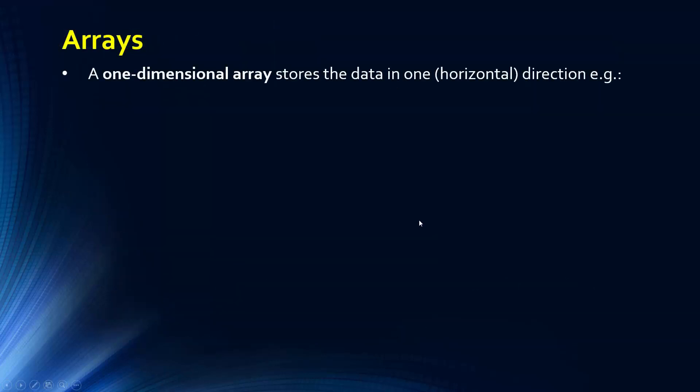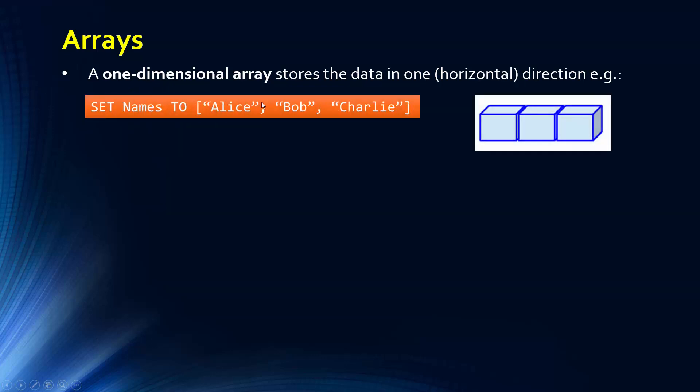If we look at two types of arrays, the first one being a one-dimensional array. A one-dimensional array stores the data in one direction, often visualized as being horizontal. This is the vector. This is pseudocode, Edexcel pseudocode for setting an array. This is our identifier name called names. If we want to access one of these elements, this is the format in pseudocode we might use. This is our index position one, we're going to be zero indexing. Alice is zero, Bob's one, Charlie's two. So we're going to get Bob returned to us.